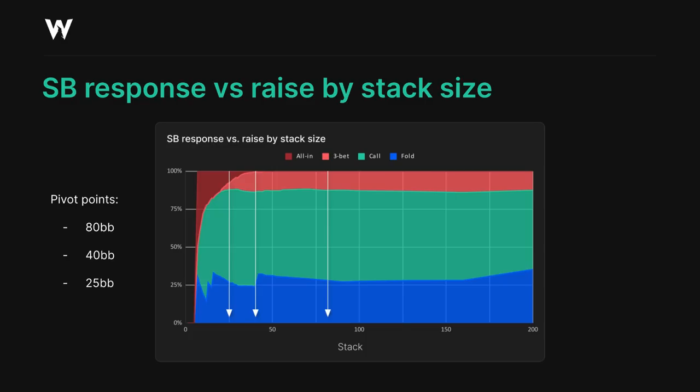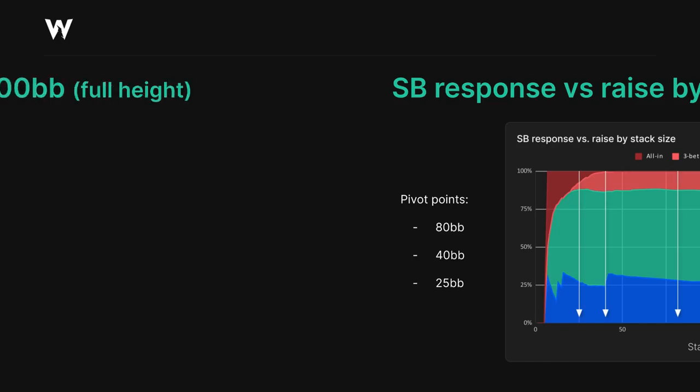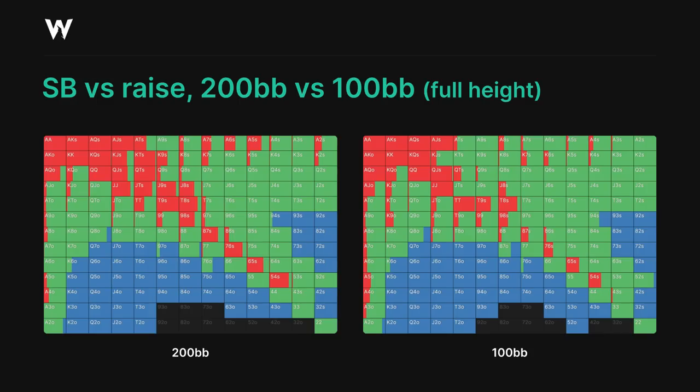Keep in mind when you see these ranges that not all the hands within the ranges are limping first in at high frequencies. Let's start with deep stacks again, in this case comparing 200 big blinds with 100 big blinds. As you can see, the strategies are very similar.